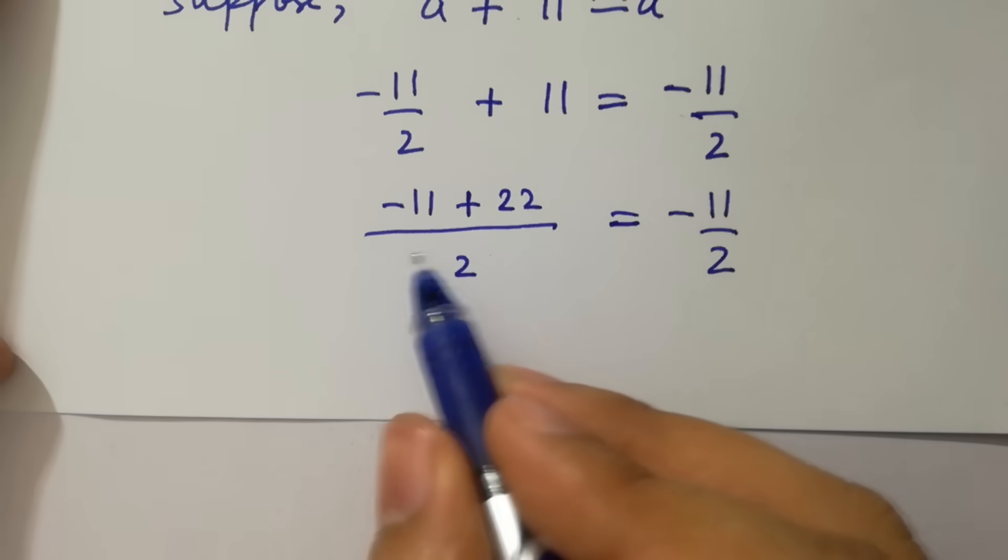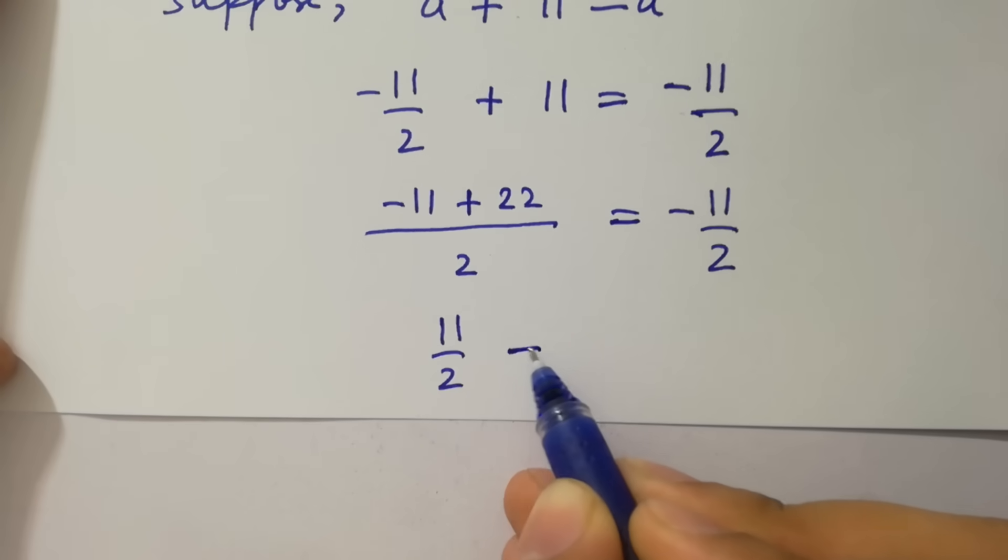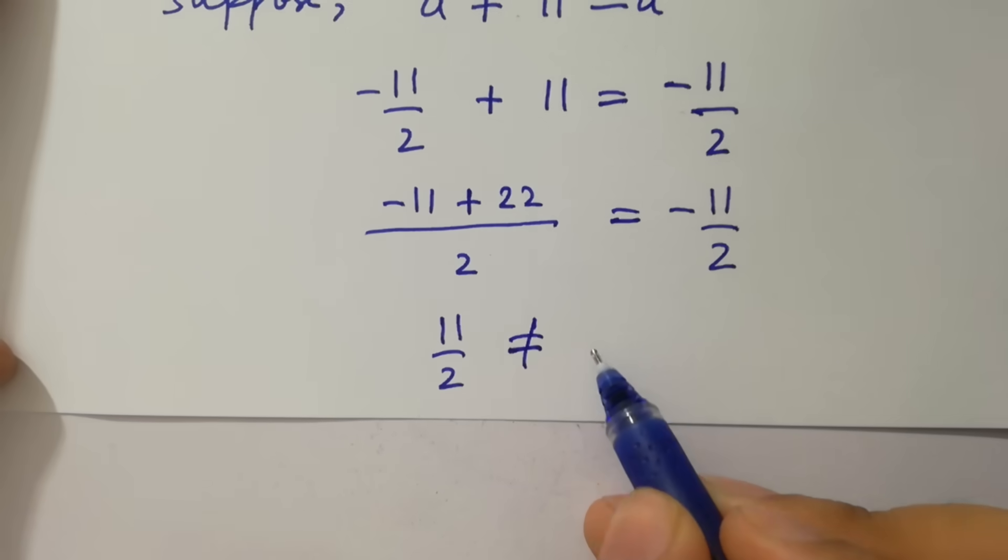Next, we have 22 minus 11 will be 11 over 2, which does not equal to minus 11 over 2. So, but why?